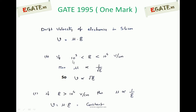When the electric field is between 10³ and 10⁴ volt per centimeter, mobility is affected by the electric field — mobility reduces. Mu is proportional to 1 over the square root of E. So as electric field increases, mobility reduces. From the drift velocity equation V equals Mu into E, velocity becomes proportional to the square root of electric field. Even though velocity still increases, the rate of increment is reduced compared to before.